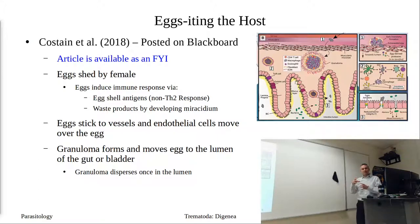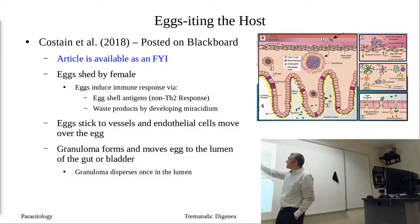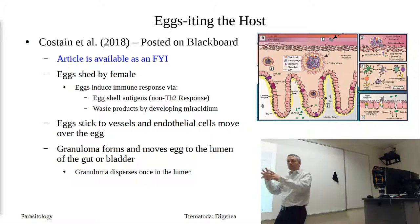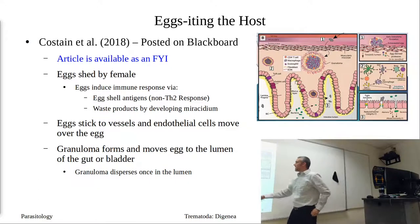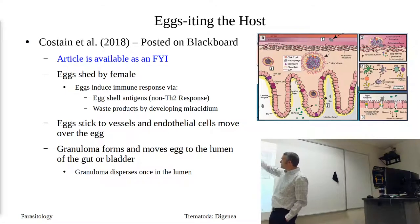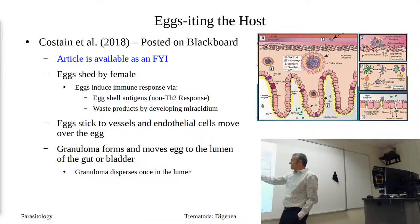Once the egg is in the tissue, your effector cells from the immune and inflammatory response come in to form a granuloma. Since it can't destroy the egg, it starts to move the egg through the tissue until it gets to the lumen side of the gut. The granuloma cells that were forming it will start to disperse and break up, allowing our egg to escape from the host. So it moves through, comes into the gut lumen, and then disperses, releasing the egg.